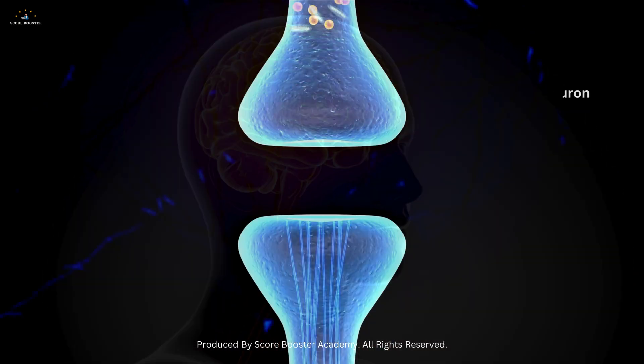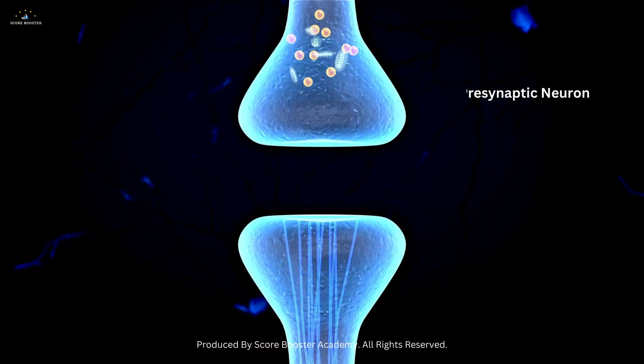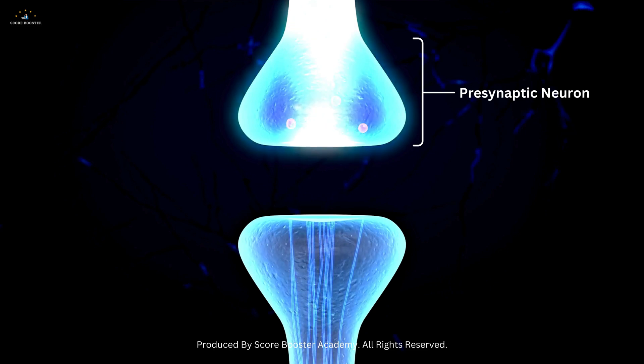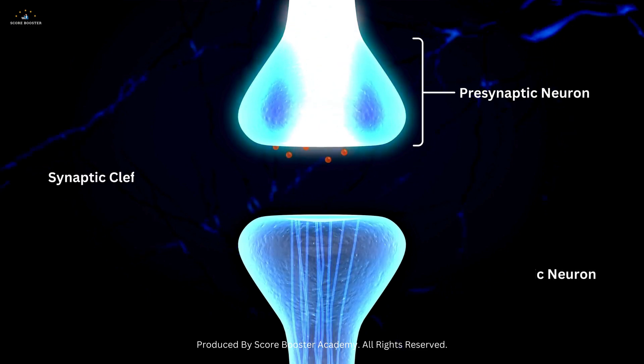When an electrical signal, or action potential, reaches the end of the pre-synaptic neuron, it triggers the release of these neurotransmitters into the synaptic cleft.